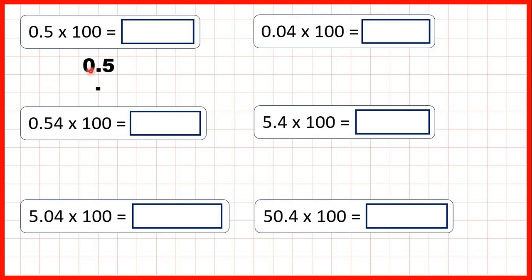So if we copy down this 0, then move 1, 2 squares to the left, and do the same with this 5, we now have 0, 5 and then an empty square before the decimal point. We know that the place value before the decimal point is the ones place, and we can't have an empty ones column, so we need to write a 0 in this square. That gives us 0, 5, 0 and a decimal point on the end. When we have a decimal point on the end of a number and nothing after it, we have a whole number. So our answer is 50, because we can ignore this 0 in our hundreds column.